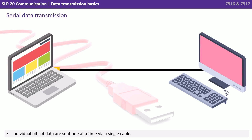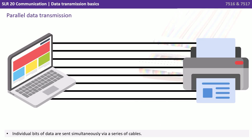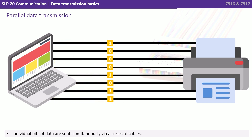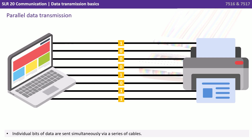With serial data transmission, individual bits of data are sent one at a time via a single cable. With parallel data transmission, individual bits of data are sent simultaneously via a series of cables.